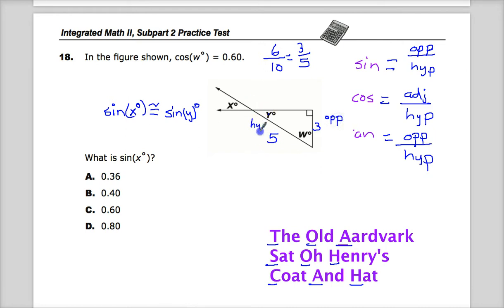If I want sine for y, I'm going to do opposite over hypotenuse. The opposite is 3, the hypotenuse is 5. So there it is: sine of y and sine of x, the sine ratio, is three over five, which converts back to 0.6.